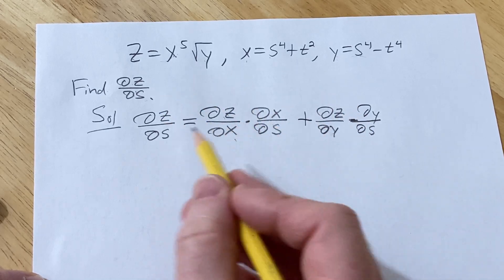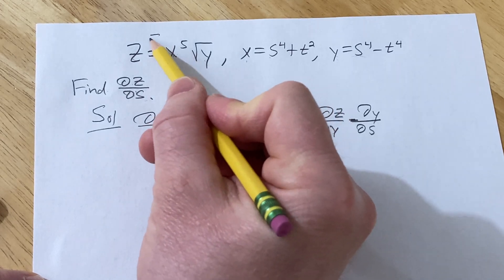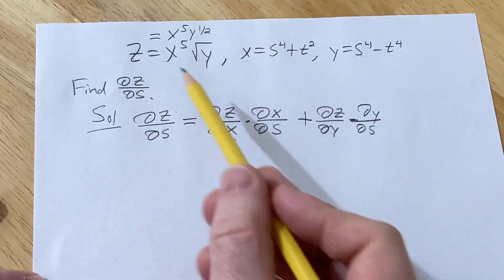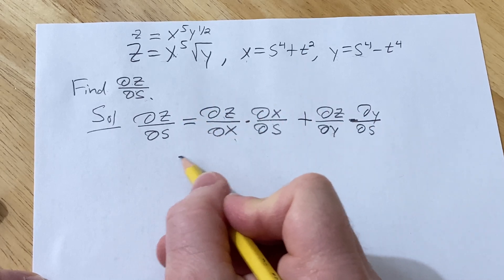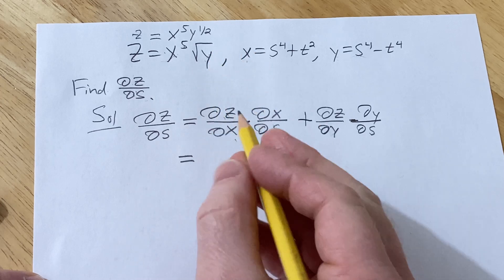Okay so now we're just going to take these partials. Before we do, let's think about this as x to the fifth times y to the one half. That way when we differentiate it's a little bit easier to think about. So this is equal to 5x to the fourth, right, this is a constant.